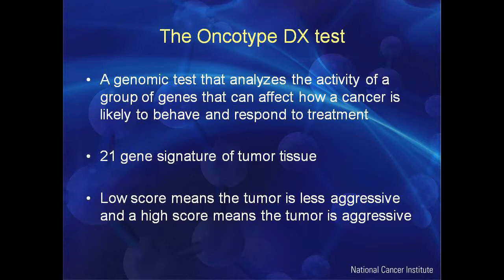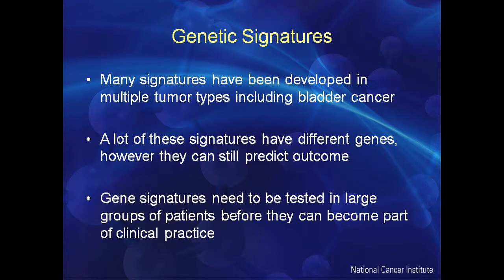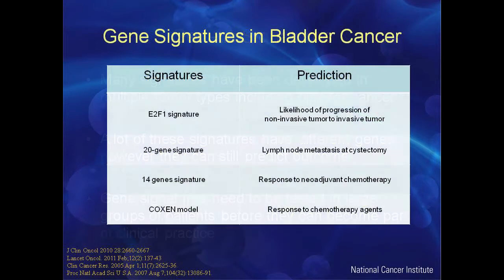Depending on the group of genes that are activated, patients get a score. A low score means the tumor is less aggressive, and these patients tend to be treated just with hormone therapy. A high score means the tumor is more aggressive, and these patients receive chemotherapy in addition to hormone therapy. There are many signatures developed in multiple tumor types, including bladder cancer. Interestingly, the genes activated in these signatures are not always the same, but they still have predictive power. Gene signatures, however, need to be tested in large groups of patients before they become clinical practice.